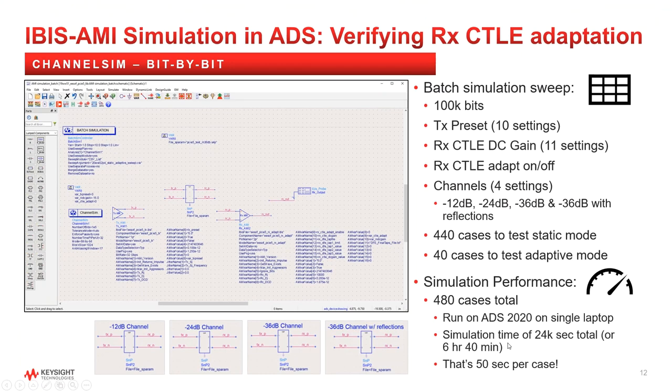Next, let's take a closer look at the CTLE adaptation feature. The 480 case sweep varied the parameters listed here.